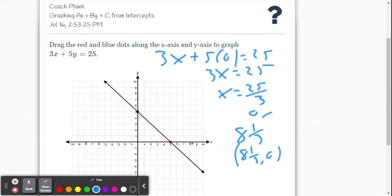So that means our x-intercept is simply 8 and 1 third comma 0. So that's going to be approximate. Here, you can't get exact. And delta math is going to give us a little wiggle room where we put that.